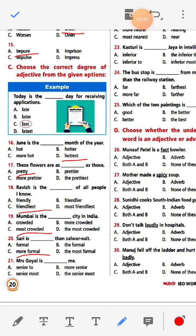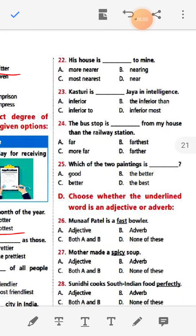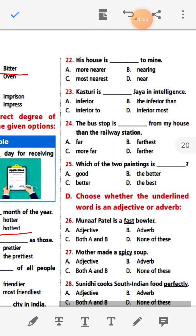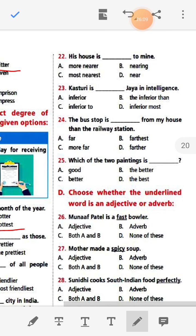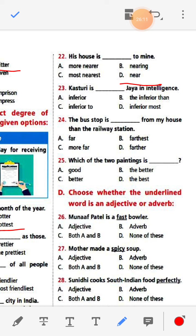Sari is more formal than salwar suit. Mrs. Goyal is senior to me. His house is near to mine. Kasturi is inferior to Jaya in intelligence. The bus stop is farther from my house than the railway station.